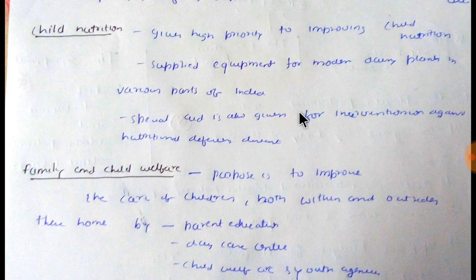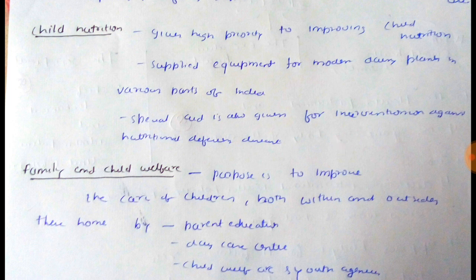Talking about child nutrition — UNICEF gives high priority to improving child nutrition. This is done by supplying equipment for modern dairy plants in various parts of India to provide nutritive food at the plant level. Special aid is also given for interventions against nutritional deficiency diseases, such as Vitamin A, iron, folic acid tablets, and iodine — these are the main areas UNICEF focuses on.